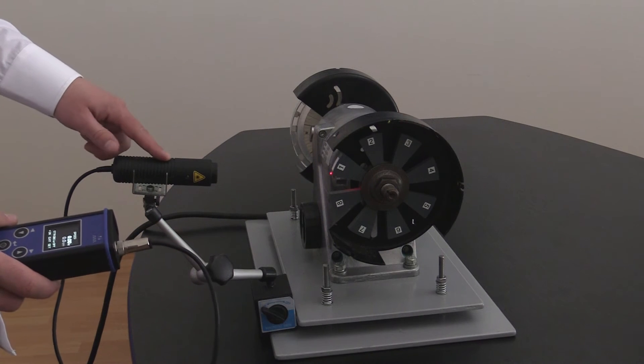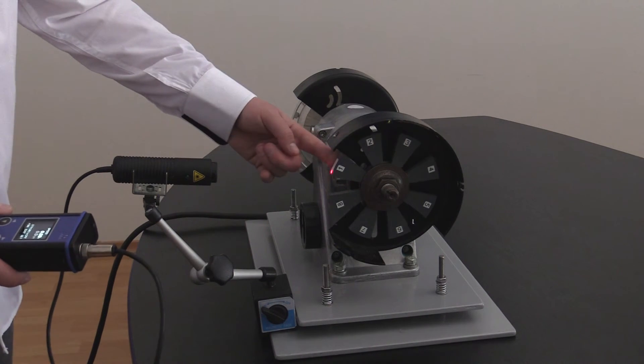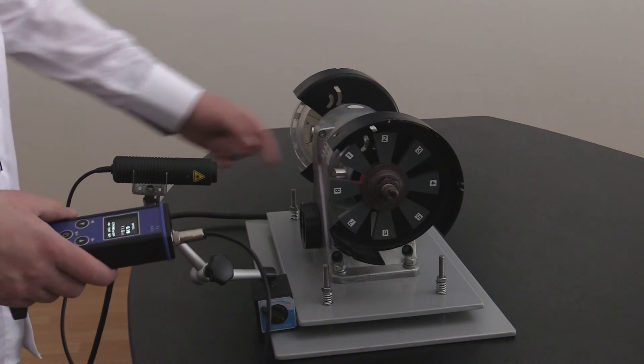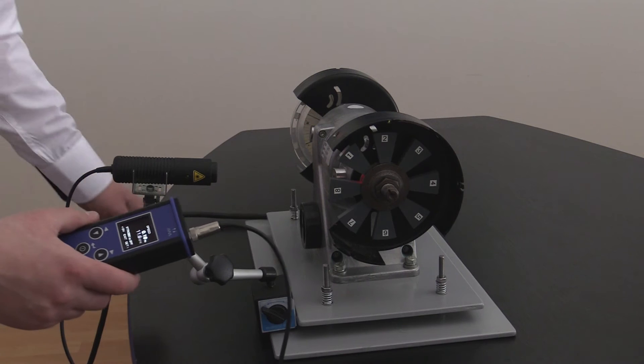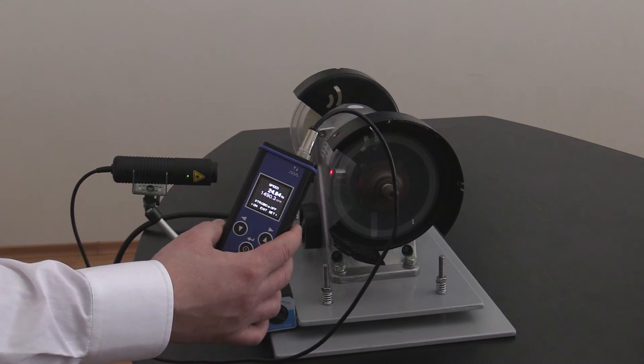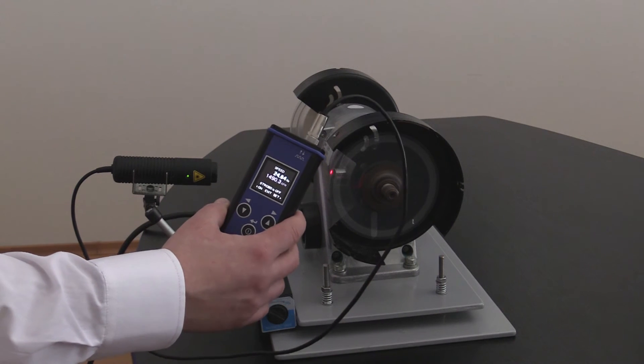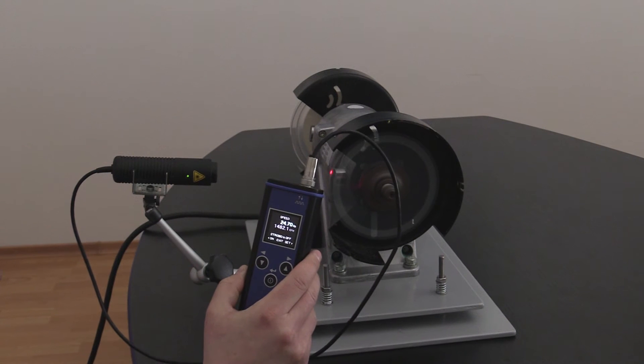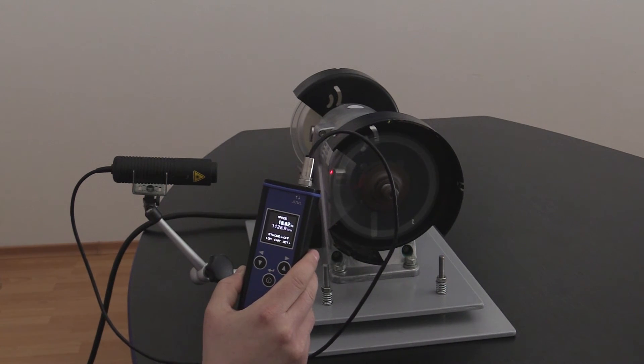Now I have connected the laser speed probe. I've got a reflection tape on the shaft and I can use the device as a tachometer. I will change the speed now and you can see the speed change on the device as well.